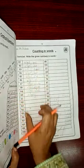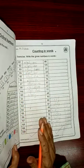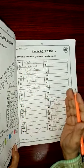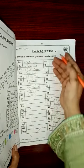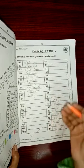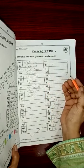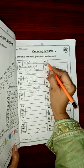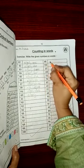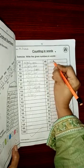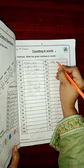Next, jo column hai ye hamara exercise column hai. Ismein humein different numbers diye gaye hain aur humein unko words mein likhna hai. Jaise 68. Ab hum yahan likhenge 68. T 8.